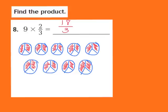Now once again, we have to make sure that our answer is in its simplest form. Right now 18 thirds, or 18 over 3, is an improper fraction. I check and see how many times 3 can go into 18 — 3 goes into 18 six whole times, and there's no remainder left over. So the whole number 6 is the product for our problem.